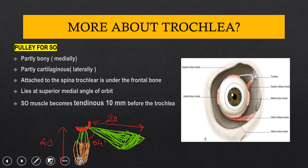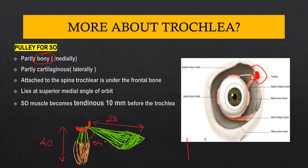A few important points about the trochlea: it acts as a pulley for the superior oblique and is partly bony and partly cartilaginous. The medial part closer to the orbit is bony, and the lateral part is cartilaginous. The trochlea is attached to the frontal bone through a spine called the spina trochleae, lying in the superior medial aspect of the orbit. The muscle becomes tendinous about 10 millimeters before entering the trochlea, and the tendon then expands and inserts below the superior rectus.